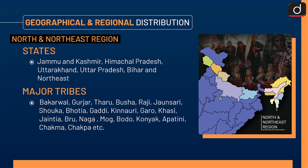The major tribes related to these states are Bakarwal, Gurjar, Tharu, Busha, Raji, Jonsari, Shauka, Bhotia, Gaddi, Kinori, Garo, Khasi, Jaintia, Brood, Nagav, Mog, Bodo, Konyak, Apatini, Chakma, Chakpa, etc.